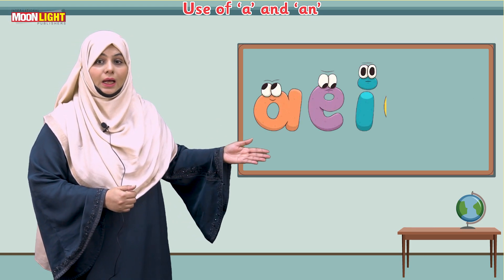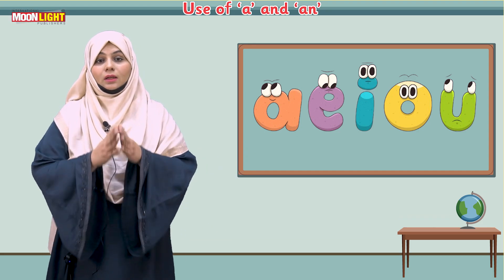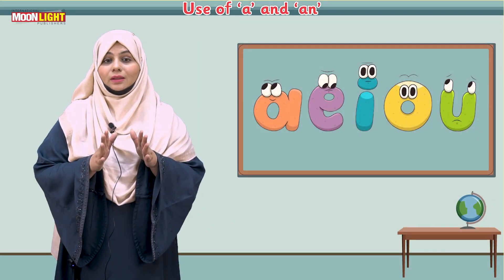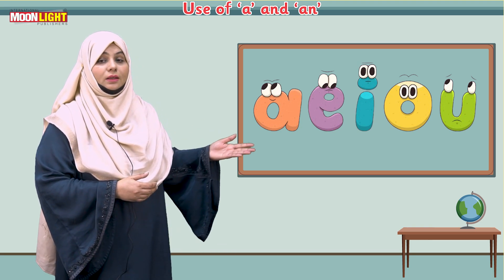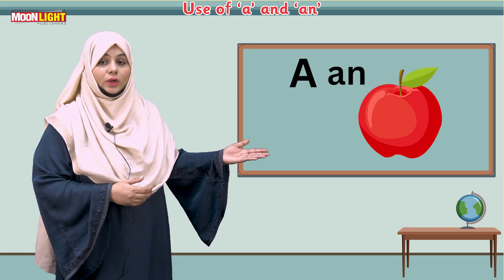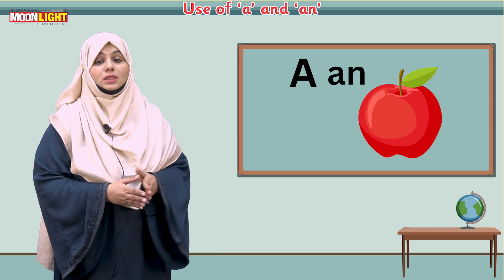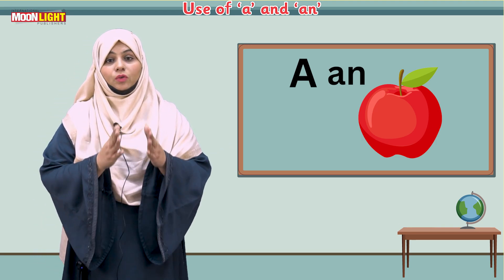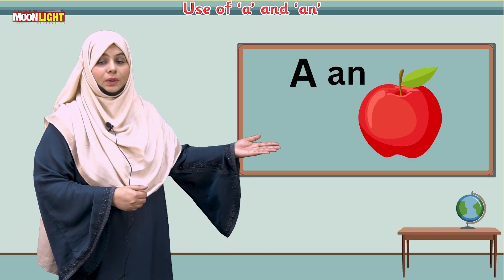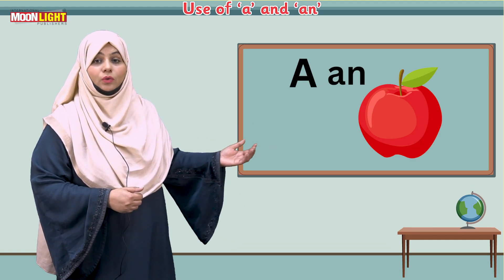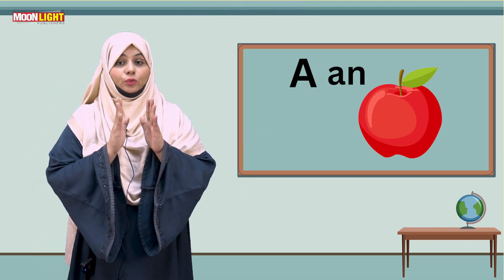A, E, I, O, U — these are the vowel sounds. When there is any vowel sound, we will use 'an'. Like 'apple' — you can see the sound of 'a' here, and this is a vowel sound, so we write 'an apple'.